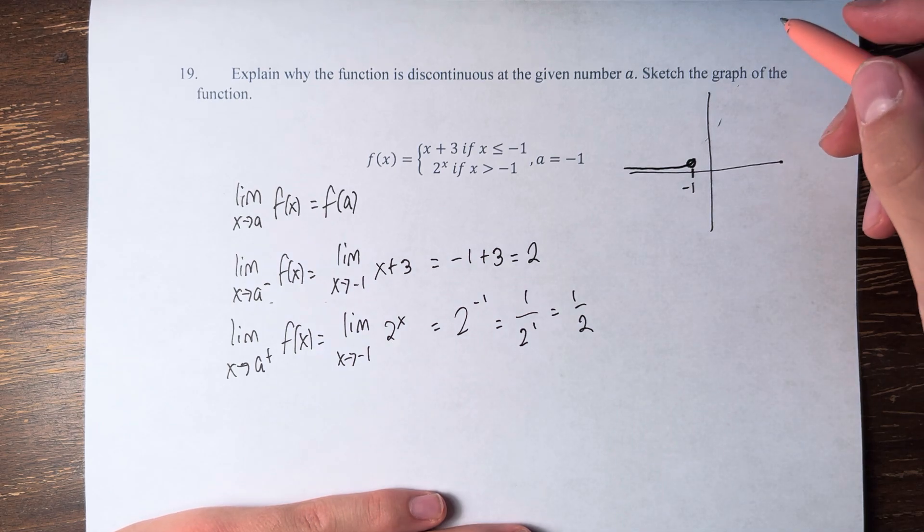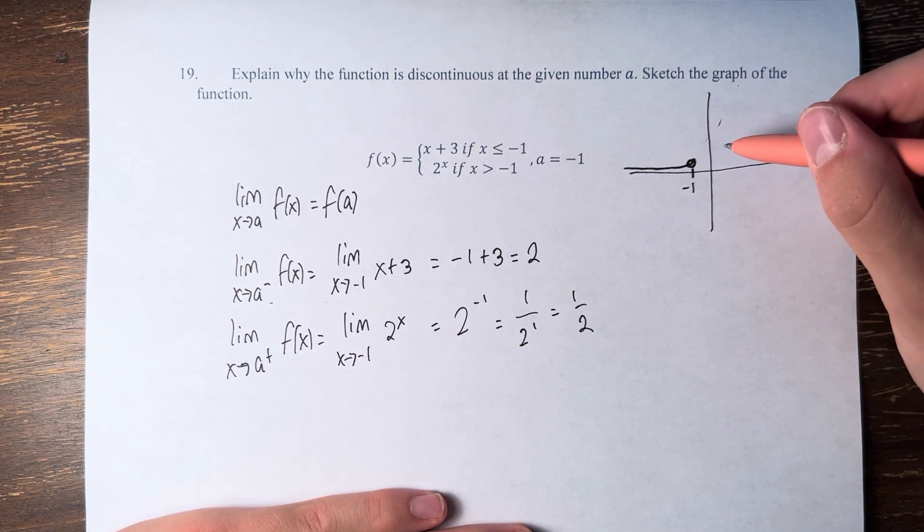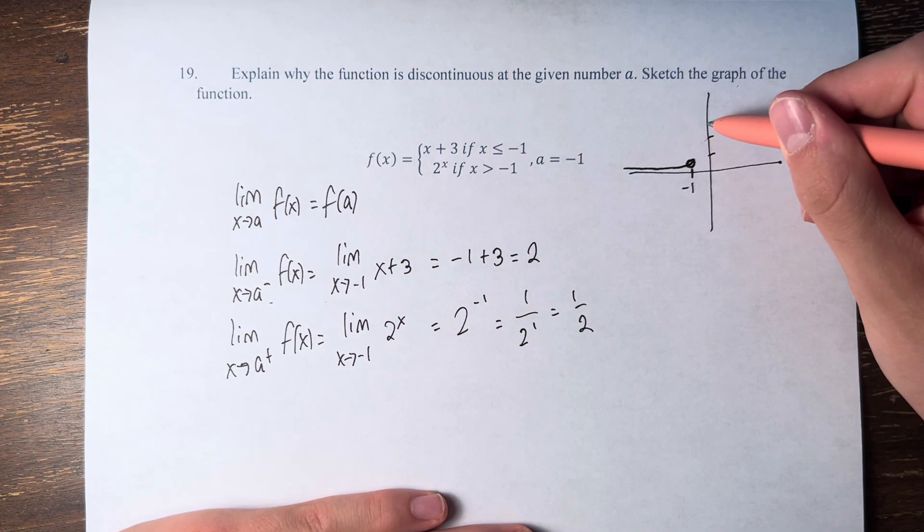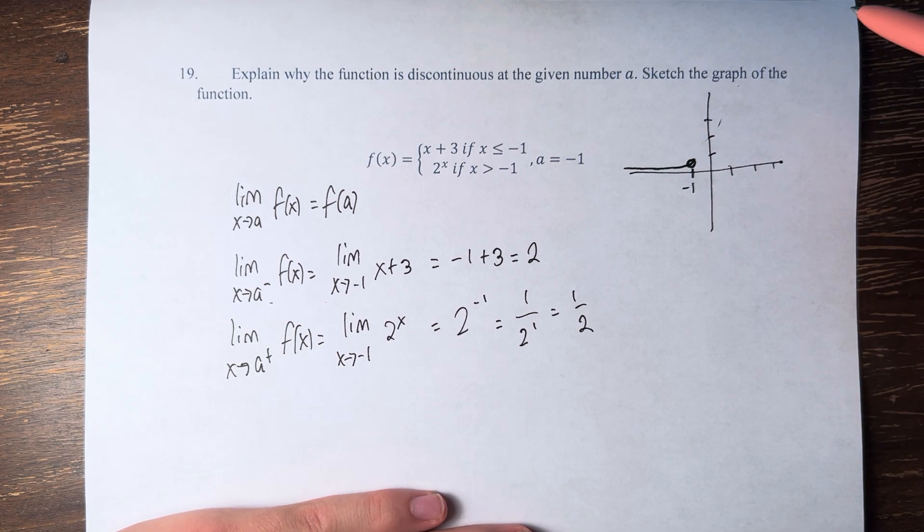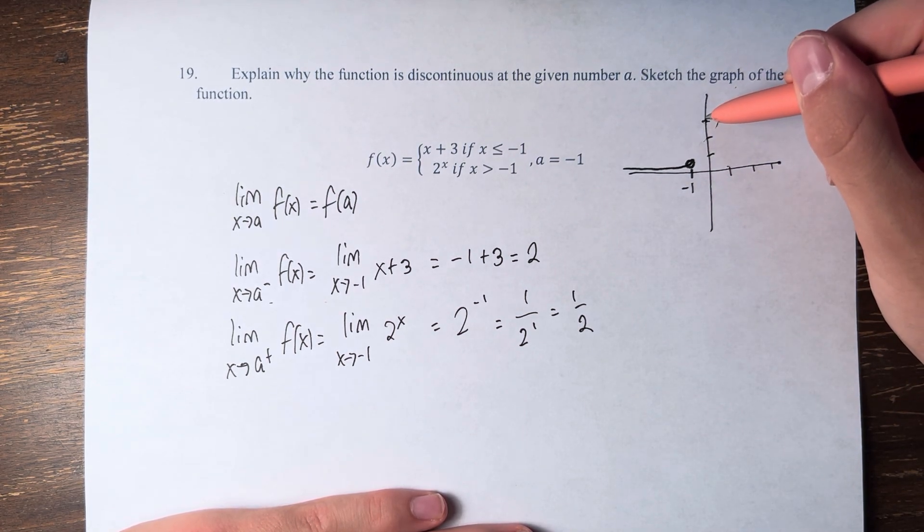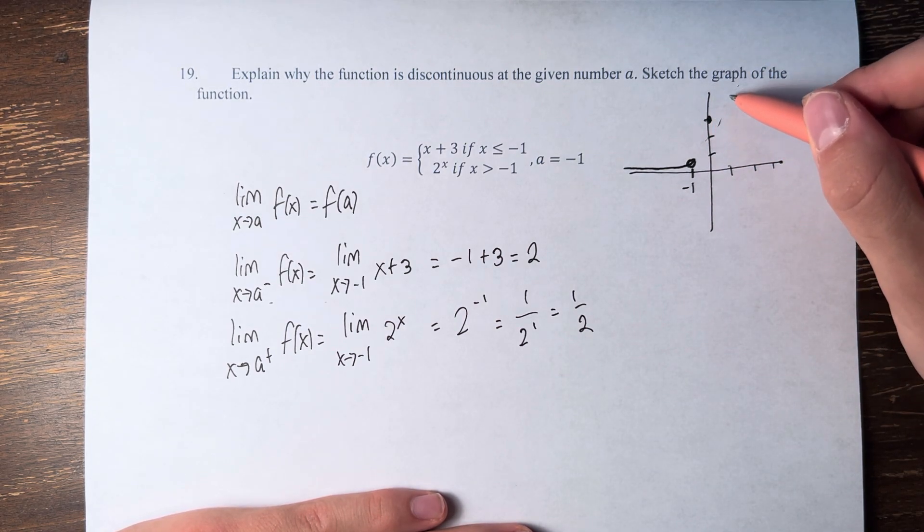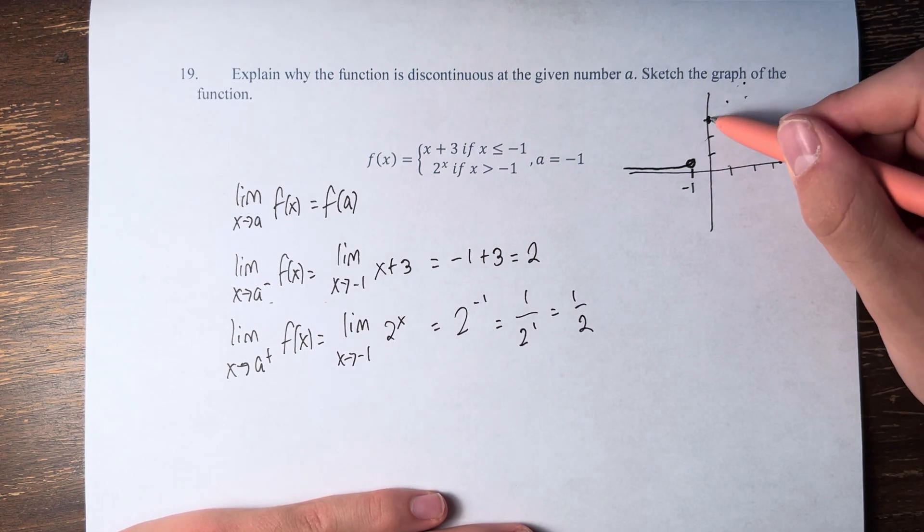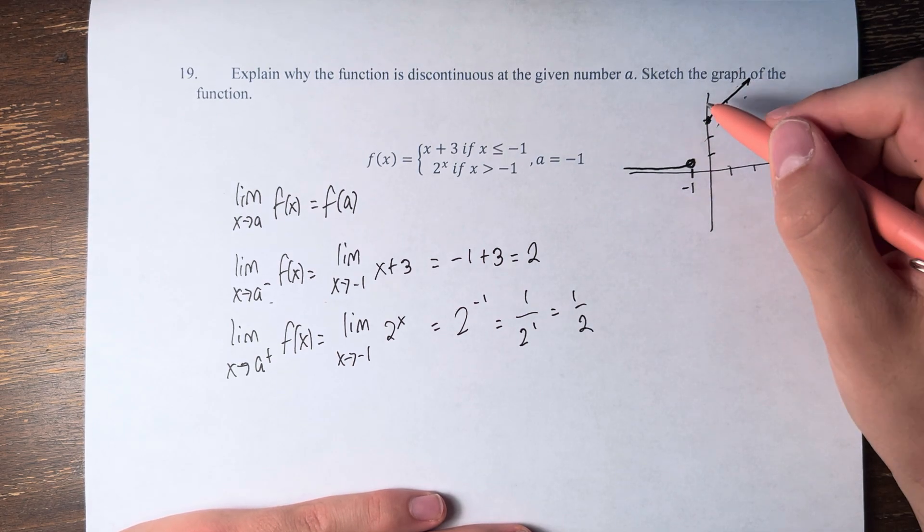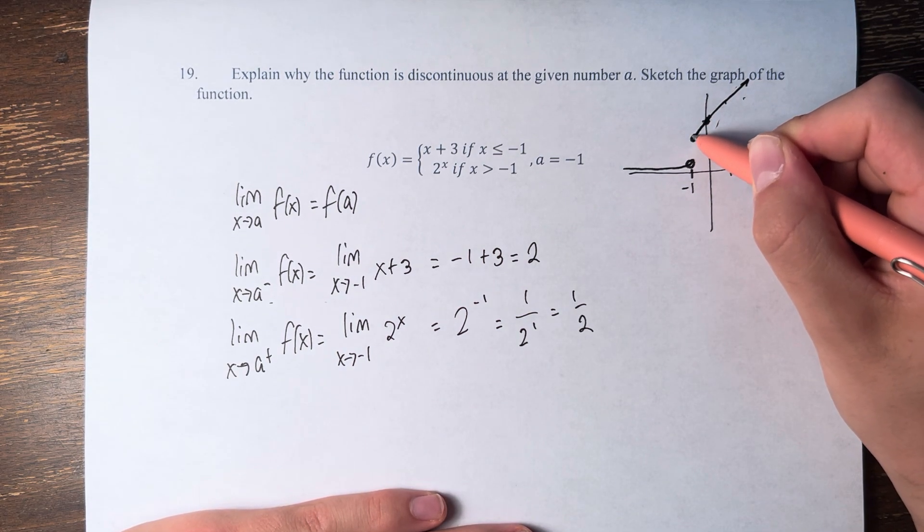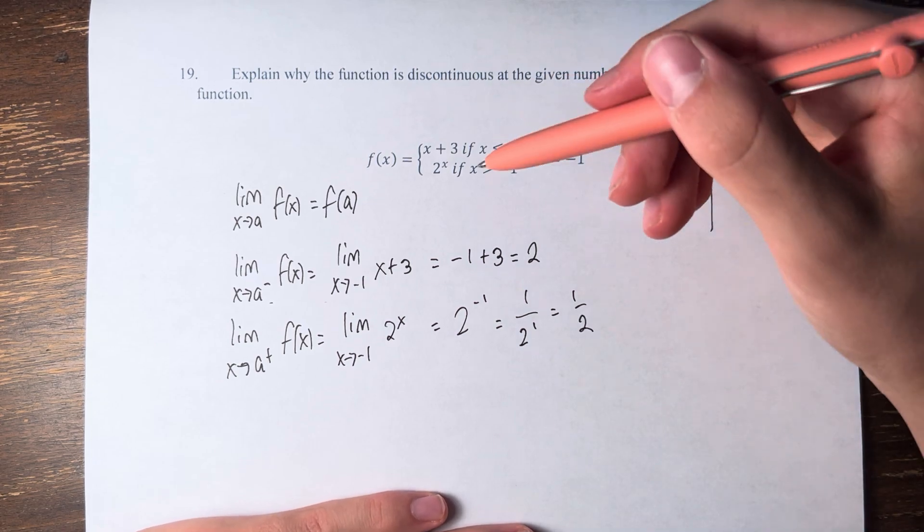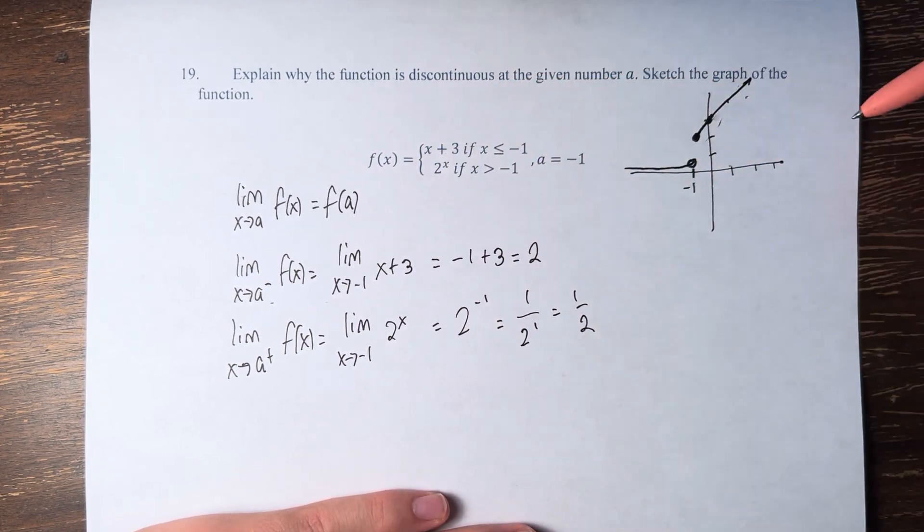And then we use x plus 3. This is a linear function. You take 3 as the y-intercept and then the slope is 1. So we go to the right 1 and up 1, to the right 1 and up 1. It looks something like this. Then we follow it down to negative 1 and draw a solid circle because it's equal to negative 1, also for x plus 3.